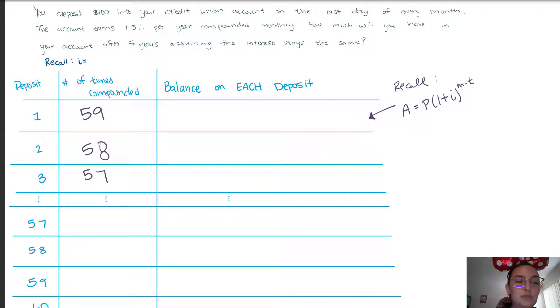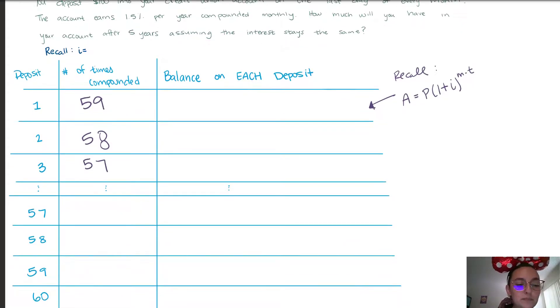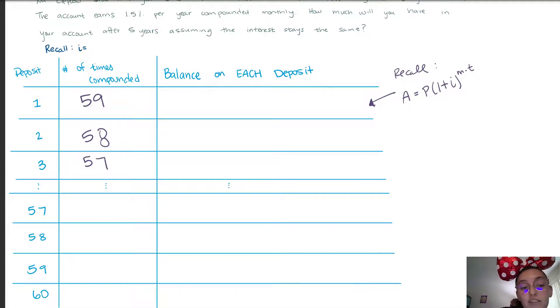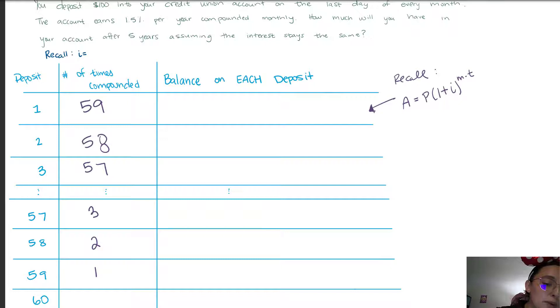It's the amount of compounding periods we have in our total term, in our n, so 60 and then minus 1 minus 2 minus 3. So the 57th deposit is only going to be compounded three times, 58 two times, 59 once, and the 60th deposit we're putting it into our bank account at the end of our 60th month. At that point we're done saving so it doesn't gain any interest, it is not compounded, it doesn't accrue any interest.